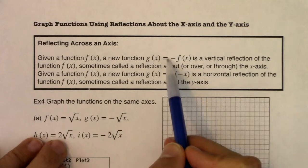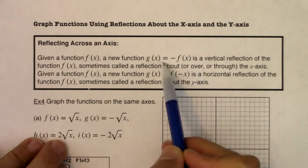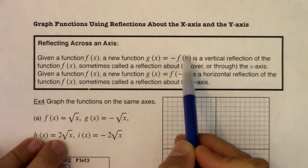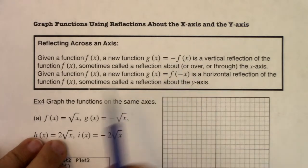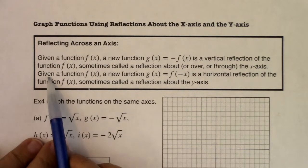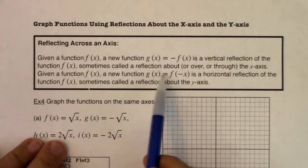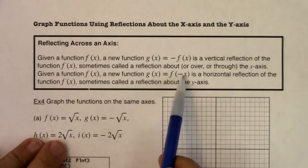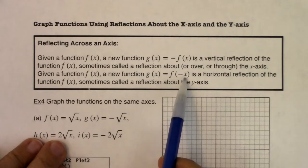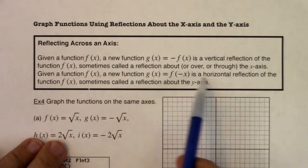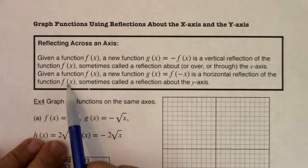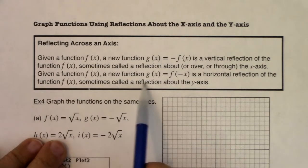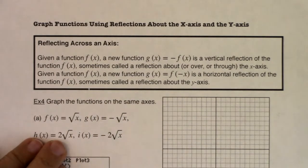Take note that the negative sign is outside of the grouping symbol — it's not in the parentheses, it's outside the function. If you have a function f and a different function g defined as f of negative x, notice the negative is inside the parentheses, inside that grouping symbol. That gives a horizontal reflection of f, sometimes called a reflection about the y axis.